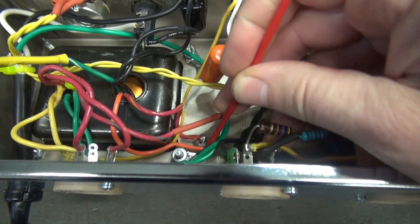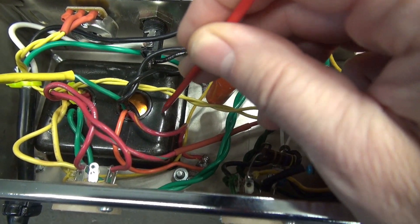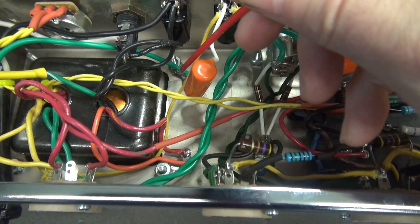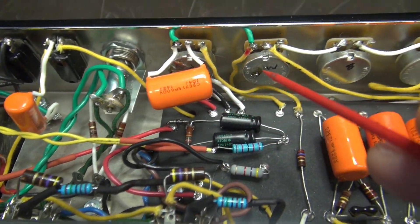Down here is another ground. The orange wire is actually the ground connection internal to the transformer. And here's the center tap for the high voltage. So now we have two ground points here. Let's see if we can find some more.